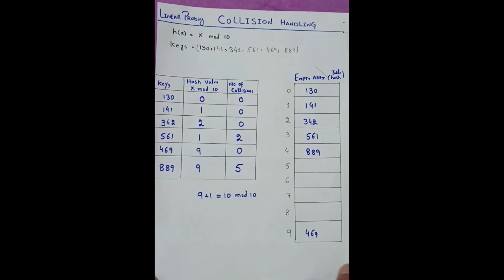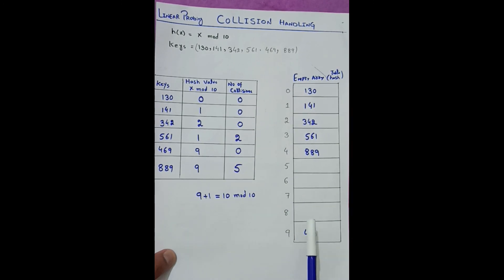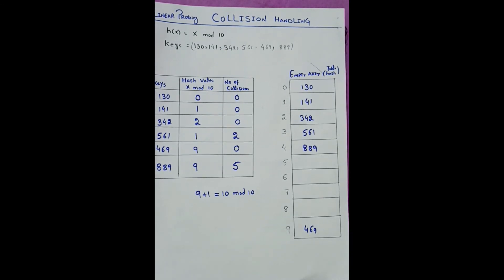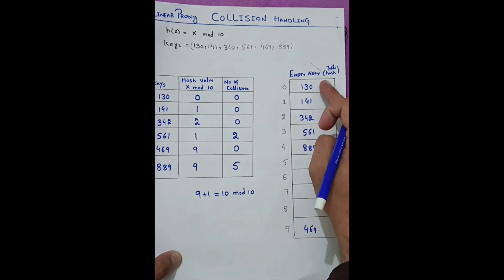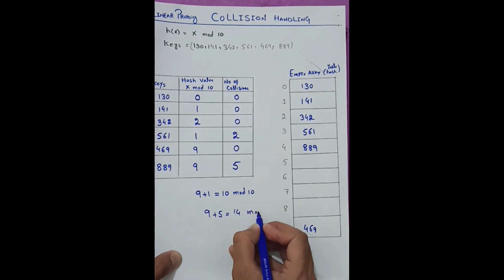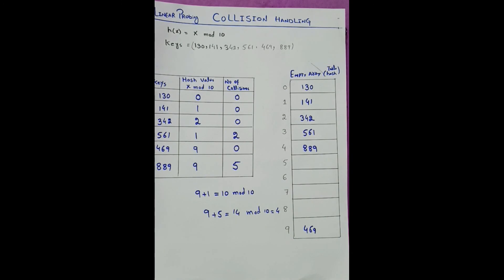In linear probing, we add 1 to the current index and take the mod with the table size. For 889: 9 + 1 = 10 mod 10 = 0 (filled), then we add 2, 3, 4, and finally 5: 9 + 5 = 14 mod 10 = 4, which is empty. So we place 889 at index 4. This is how linear probing handles collisions.